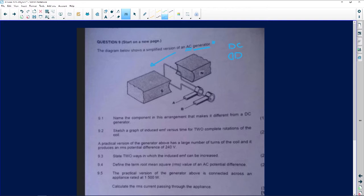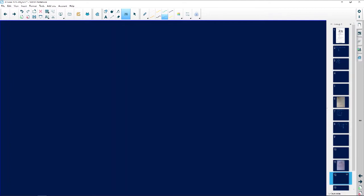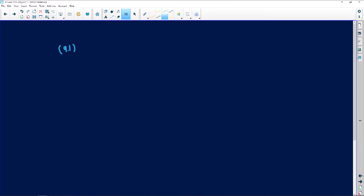So number 9.1 says, name the component in this arrangement that makes it different from a DC generator. Remember, the only thing that's different, the difference between a motor and a generator is mechanical to electrical or electrical to mechanical. However, I can have a DC generator or an AC generator. It depends whether the one has got split rings giving it direct current, or it's got slip rings which make it alternating current. So the different devices that actually make it AC or DC.